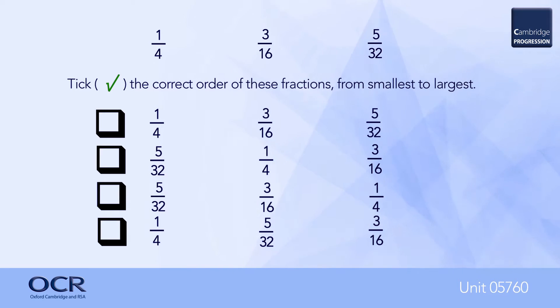Here, 4 and 16 are factors of 32, or alternatively, 32 is a multiple of 4 and 16, making the common denominator 32.